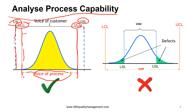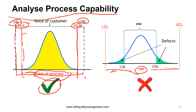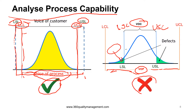As you can see, if the voice of the process — the variation — is smaller than the total spec tolerance, we consider this a good process. In another scenario, if the variation or spread is very large — bigger than the voice of the customer — then anything beyond the LSL and USL will be considered a defect. This type of process is not desirable in any manufacturing process, because the potential for producing defects is very high.